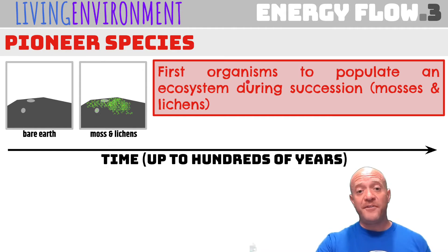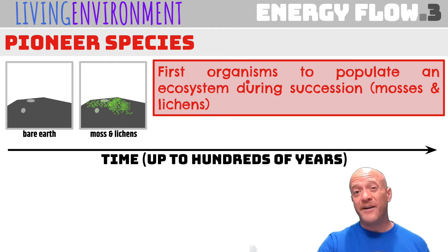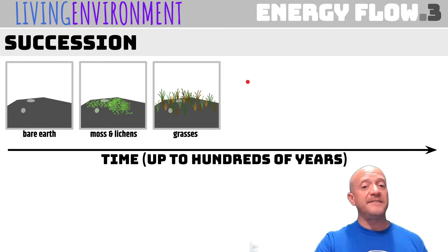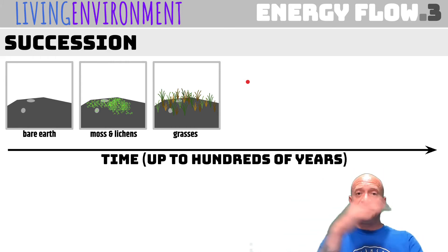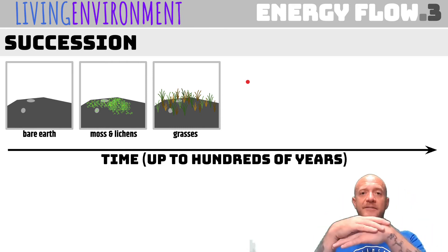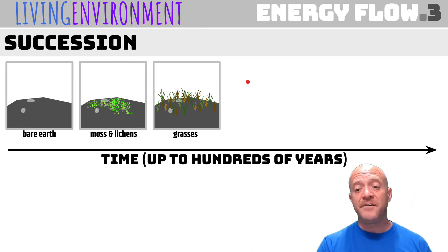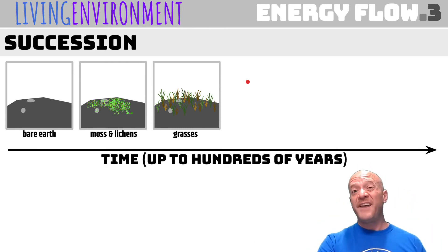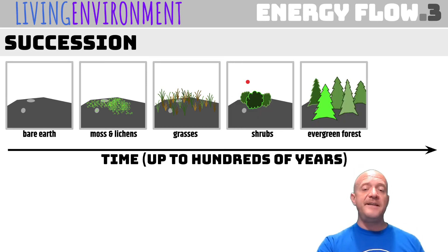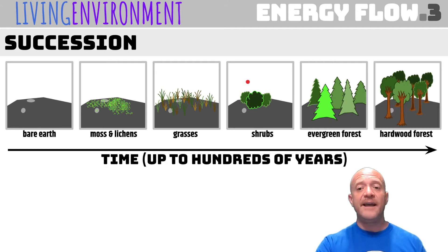Lichens are a symbiotic relationship between an algae and a fungi, and that is all you have to know about lichens unless you take AP Environmental. Now, succession occurs — first you'll get smaller organisms like grasses. What happens is you're adding layers and layers of dead material, and over time this can form thicker and thicker soil. So eventually you can support shrubs and tiny bushes, then you will get an evergreen forest, and finally you will get a hardwood forest.